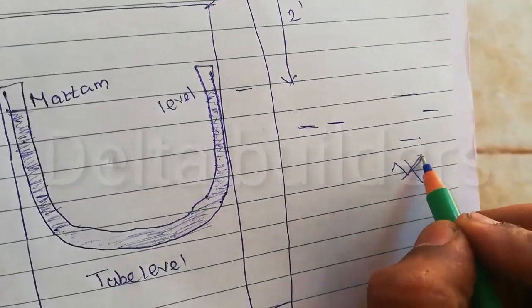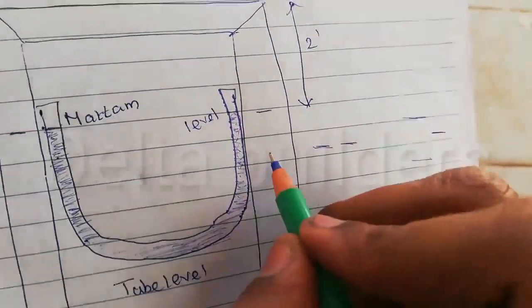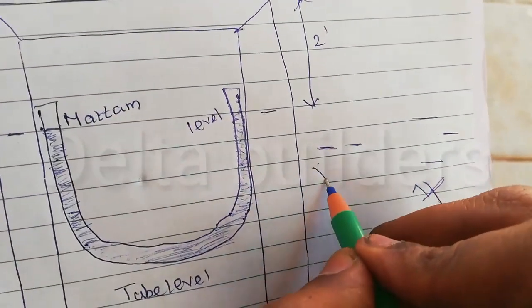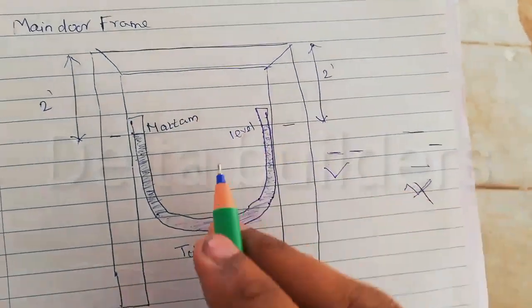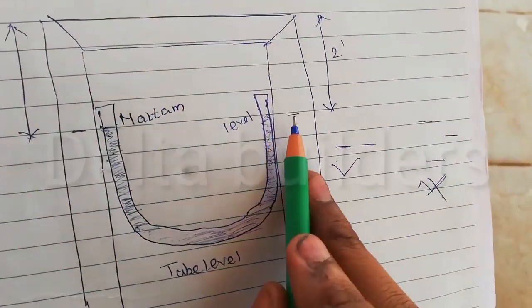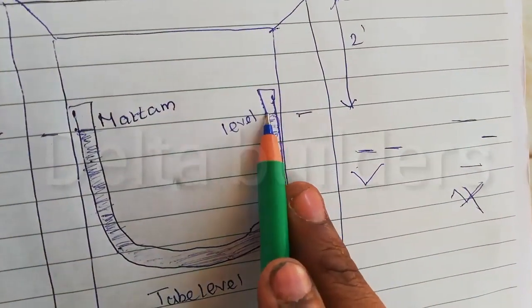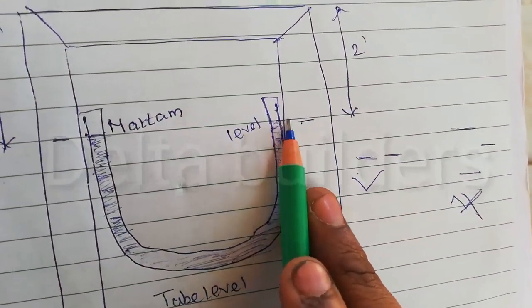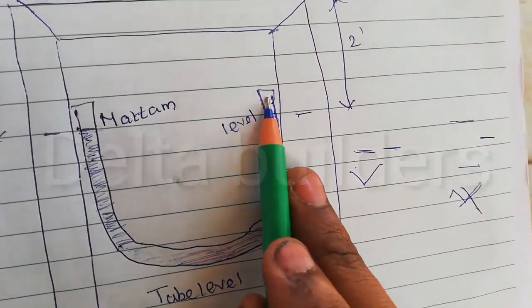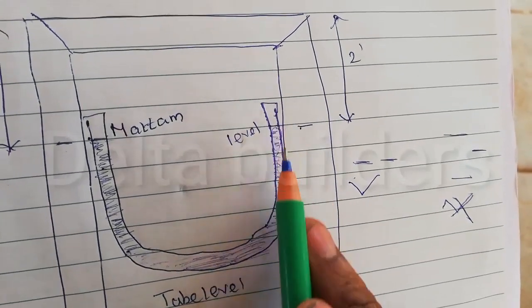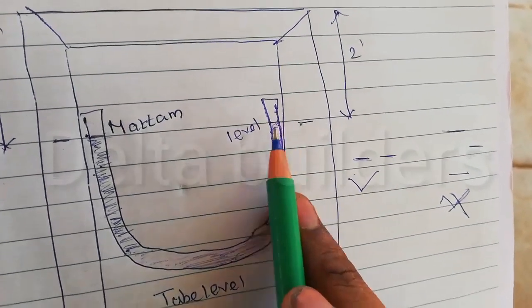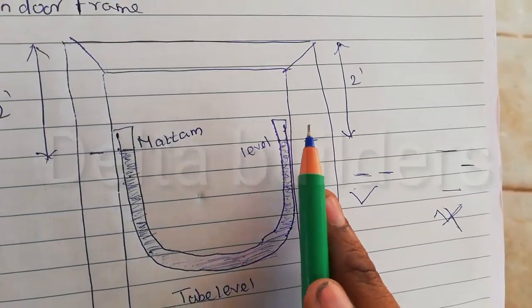Now it's not level. So it's a good thing. The water level is not level. Here we are at the bottom. So we can adjust the frame.